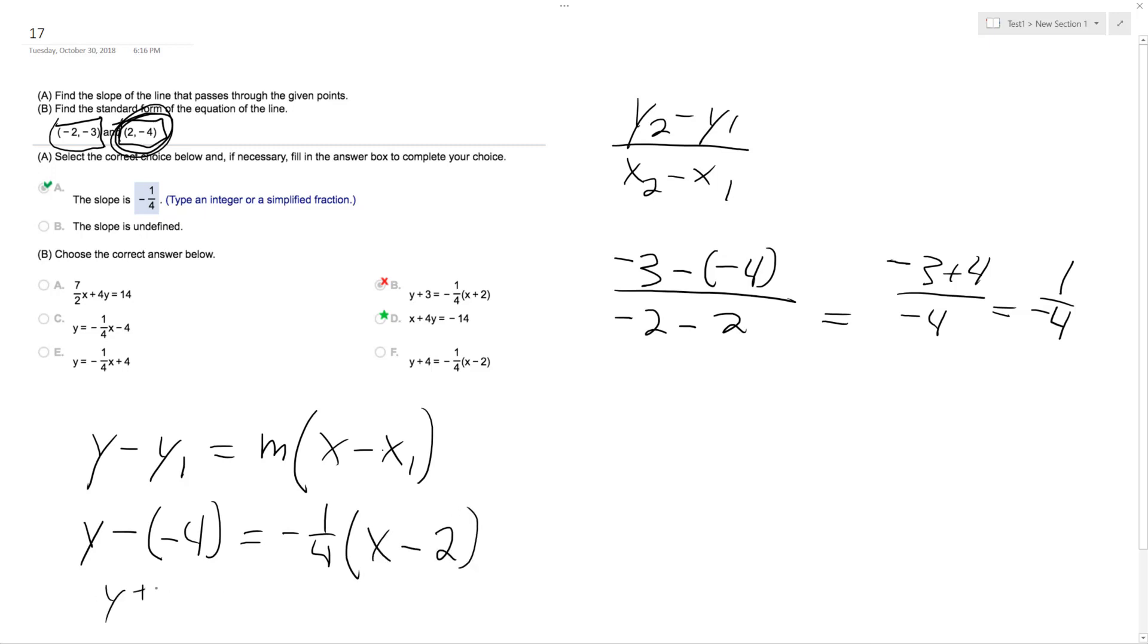So we get y plus 4 is equal to negative x over 4 plus 2 over 4, which is 1 half.